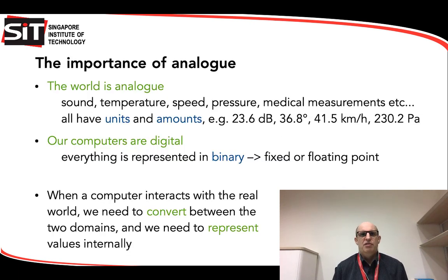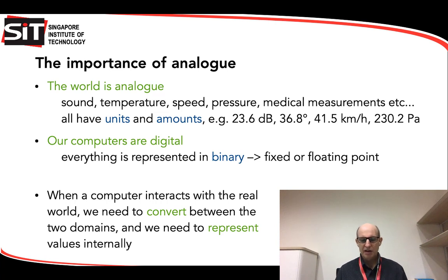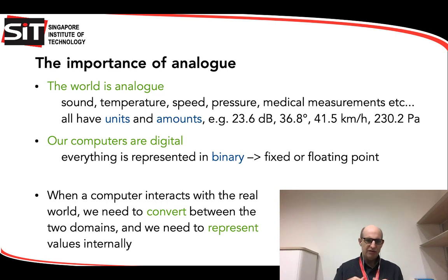The world is analogue — it's important. Everything outside a computer is measured in analogue units. For example, loudness in decibels, temperature in degrees (36.8 means you probably don't have COVID-19), speeds, pressure, and so on. These are analogue values, but the computer likes to represent things in digital values. Every computer you're going to use is digital. There are some analogue ones that have existed in history, but are not really used in today's world. So because the world is analogue and computers are digital, we need to convert between the two, and think about how to represent values in these different domains.